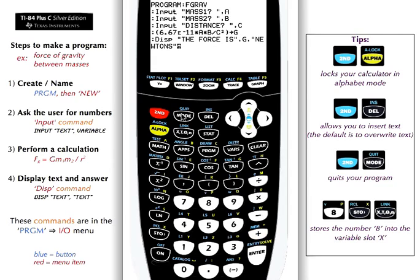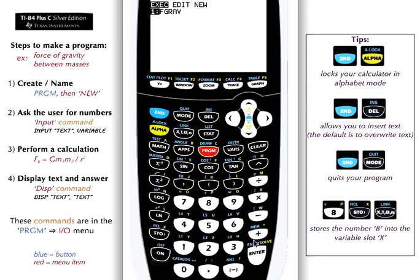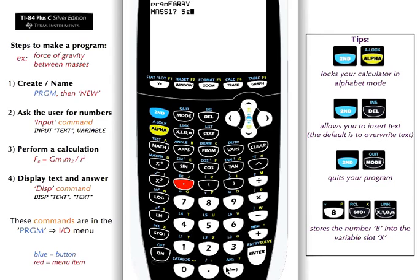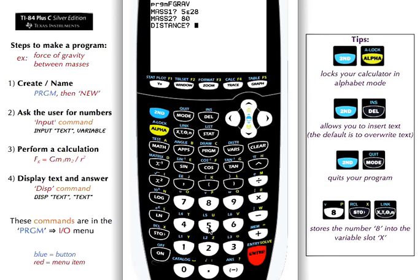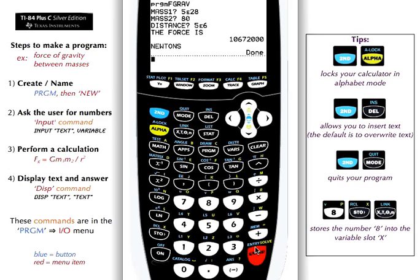Let's test it out. Quit, program, execute force of gravity, enter. Let's say mass 1 is some kind of large planet — 5 times 10 to the 28. Mass 2 is a person, 80 kilograms, and they're an appreciable distance apart, say about 5 million. This then stores variables in A, B, and C, does the math, and gives you the answer — about 20 Newtons. Hope that worked for you. Good luck.